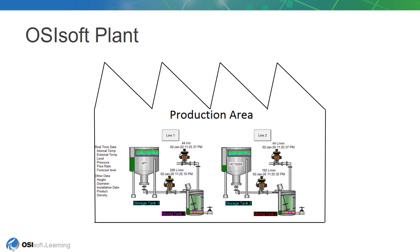In this lab, we will have a fictitious plant named OSIsoft plant. This simple plant has two production lines, where each has a combination of one mixing tank and one storage tank. This plant could be schematically shown as in this diagram. Each tank has different process variables such as internal and external temperatures, flow rate, pressure, and level, whose values are continuously collected from devices on the plant.